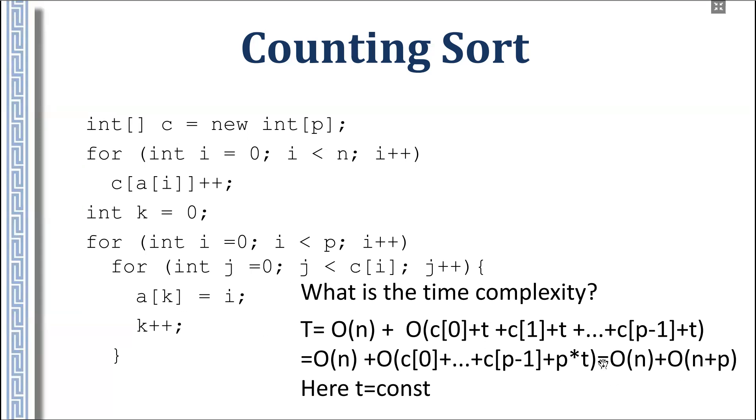We can also compute the time complexity in another way. We have at least p steps here for this for loop. And also for total number of steps, it has at least n steps because we count these k++ on each assigning. We write the same number of elements as it was in the original array. In the last step, k is n. That's why it is n plus p.